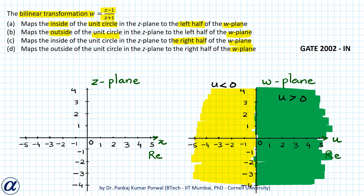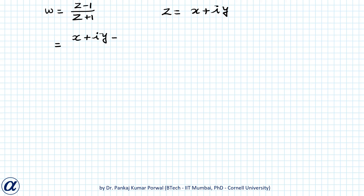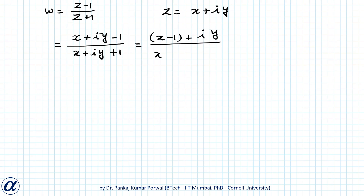Let's simplify our function w. w is z minus 1 upon z plus 1, and let's say z equals x plus iota y. So this will be x plus iota y minus 1 divided by x plus iota y plus 1, which equals x minus 1 plus iota y divided by x plus 1 plus iota y.